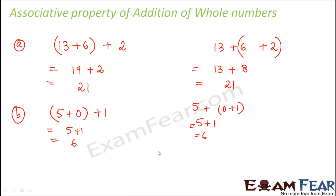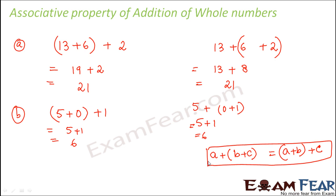We conclude that if we have three whole numbers A, B and C, then (A plus B) plus C is equal to A plus (B plus C). So the conclusion is: addition is associative. Whether you perform the addition of the first two numbers first or the last two numbers first, the result will remain the same, and that is why we say addition is associative.